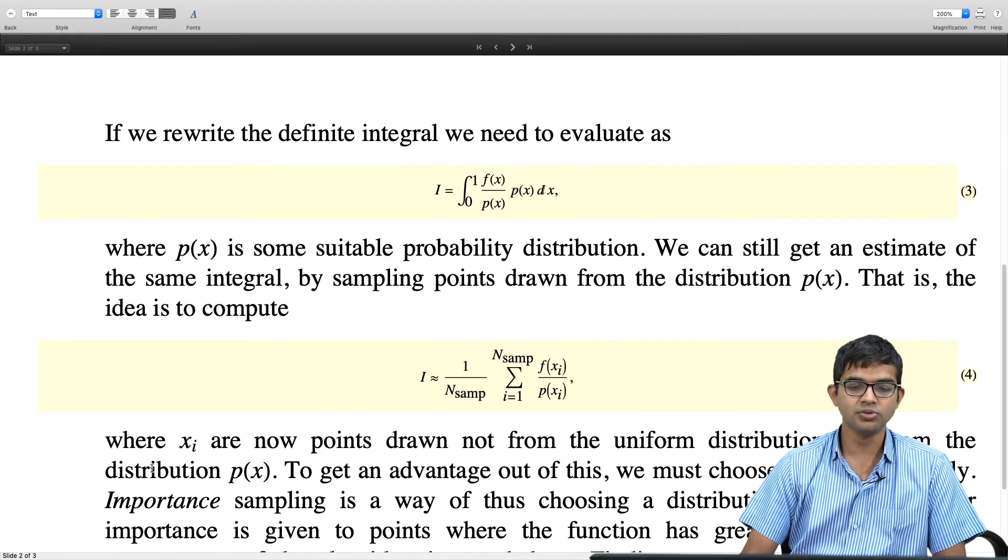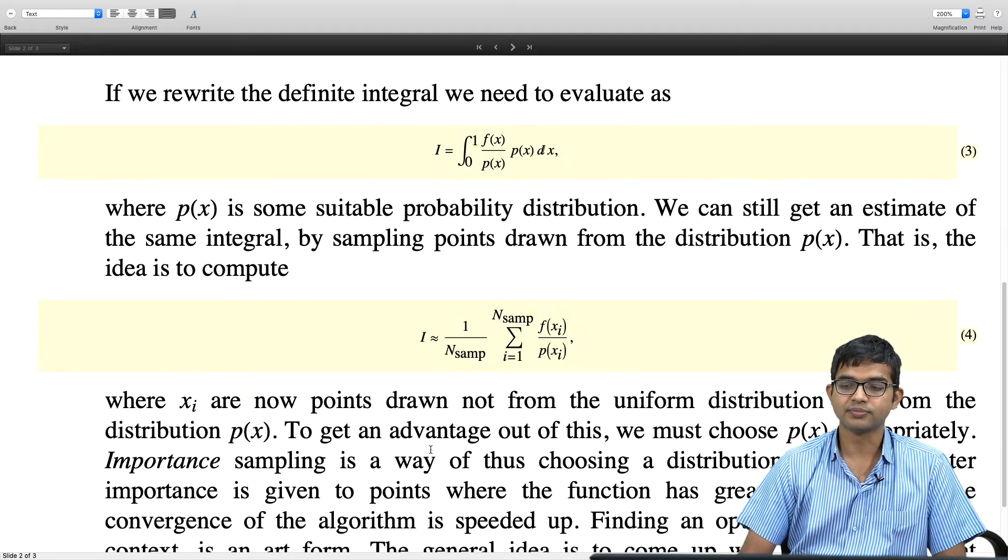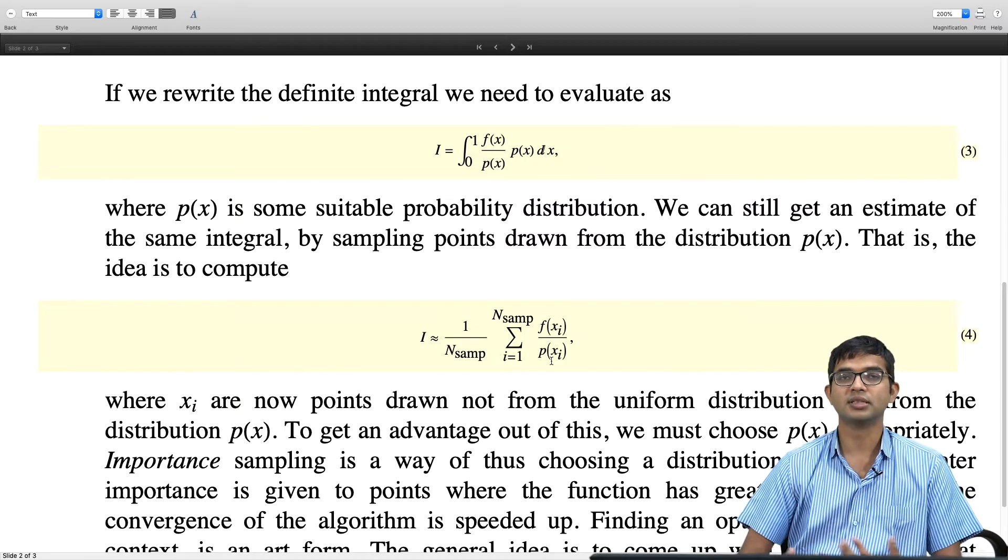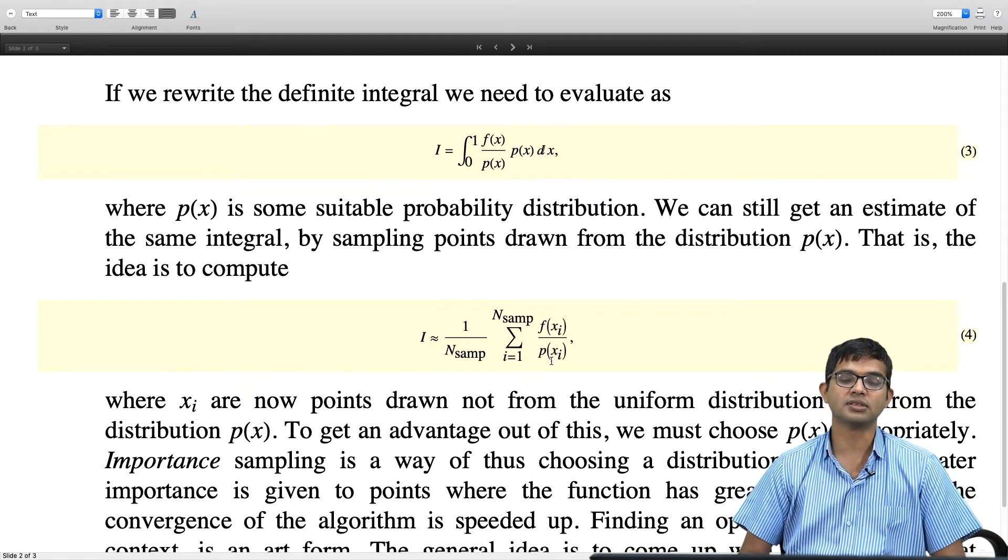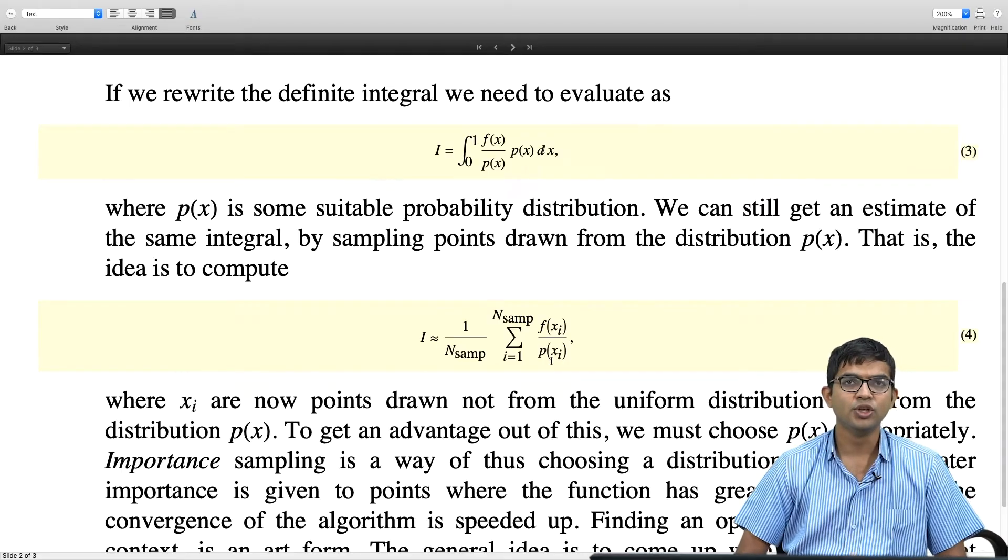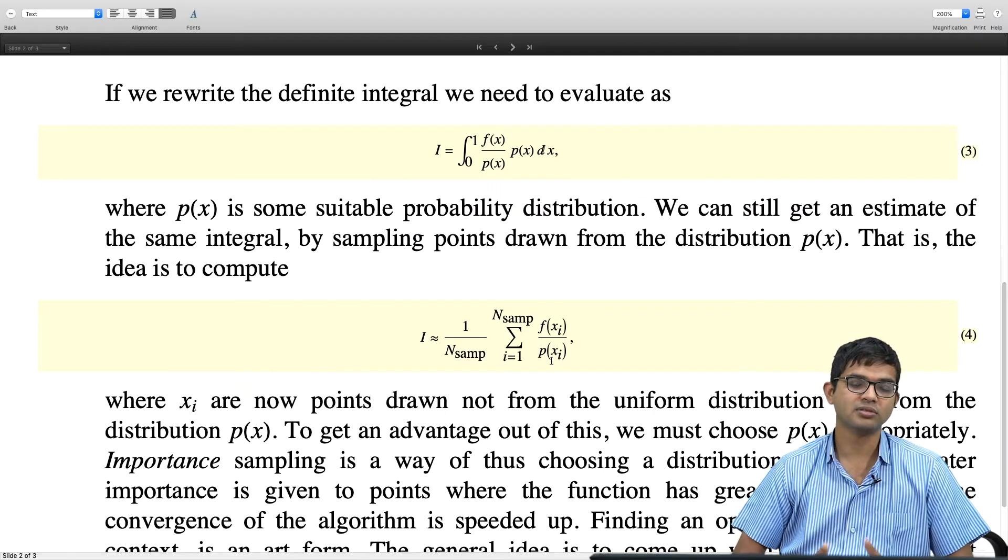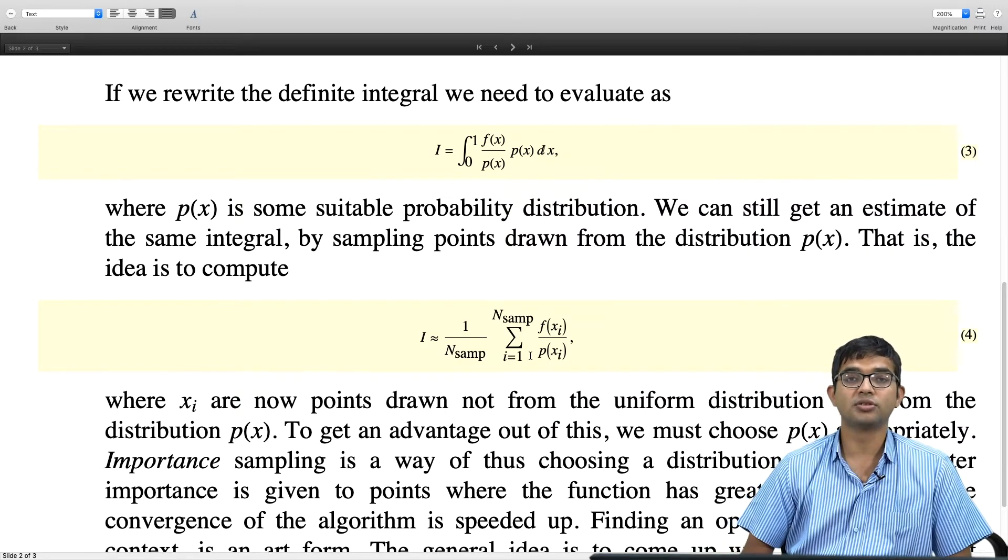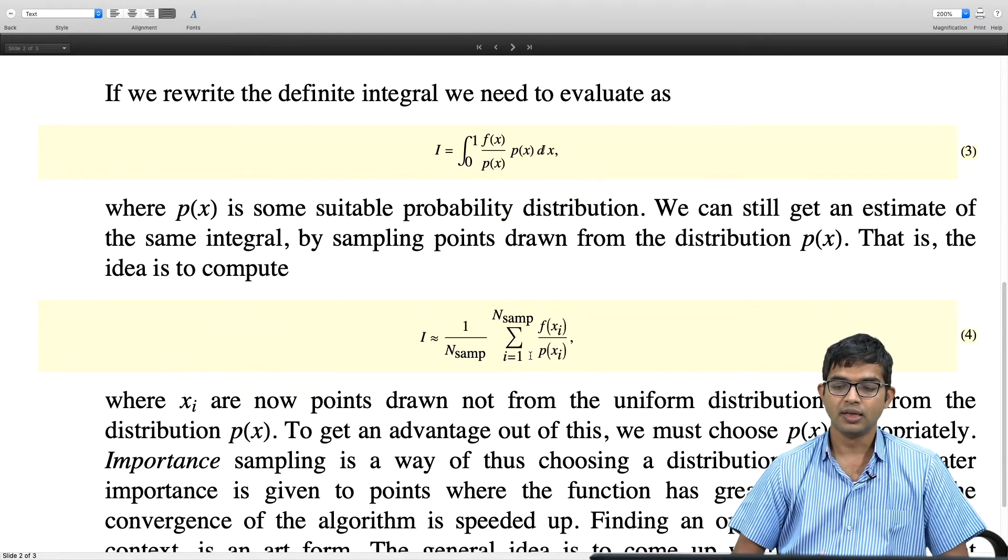Now I am telling you that you choose your x_i not from a uniform distribution, but from this distribution p(x). This you can always do no matter what this p(x) is and one p(x) is in fact the uniform distribution where you just take it to be 1 over n. Can you draw some advantage out of this?